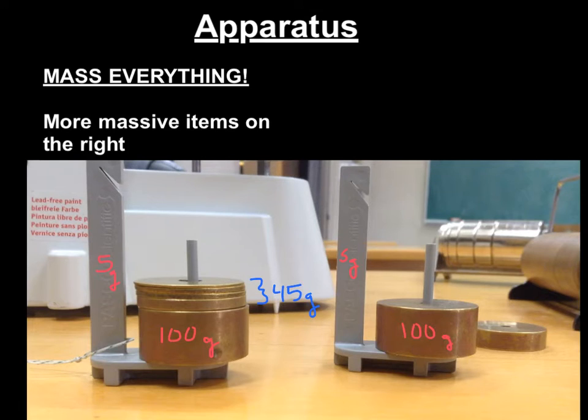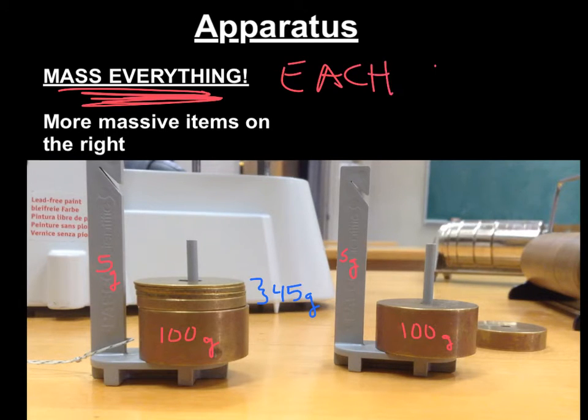So when you're working with Atwood's machine, it's very important to mass everything. Mass everything, all the time, and at each run. So every time you move a mass, you need to mass the mass of each hanger. Keep in mind that each hanger has a mass of 5 grams. And you should always have at least 100 grams additional on the hanger.